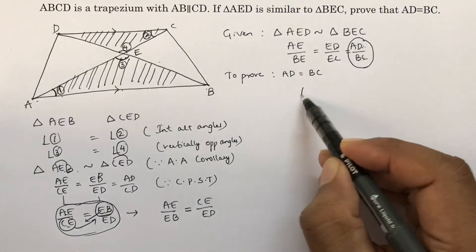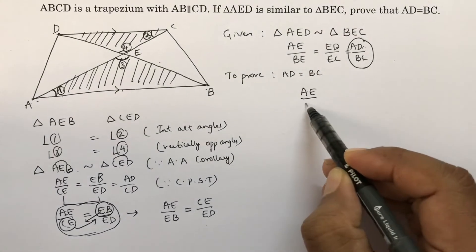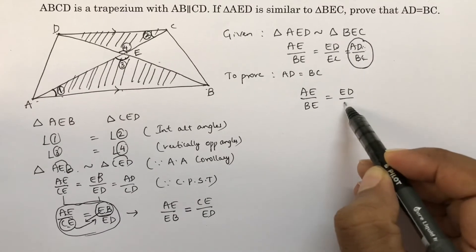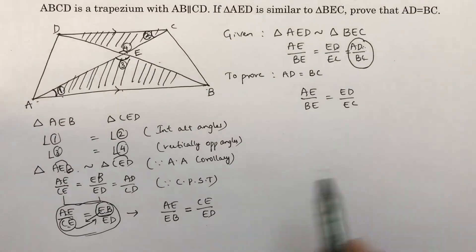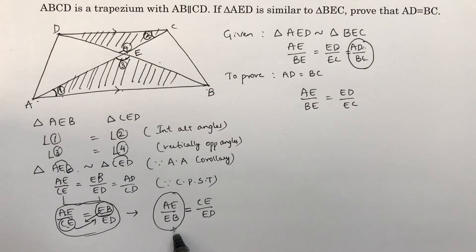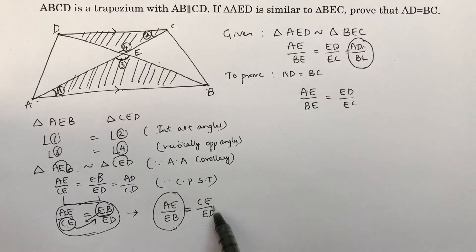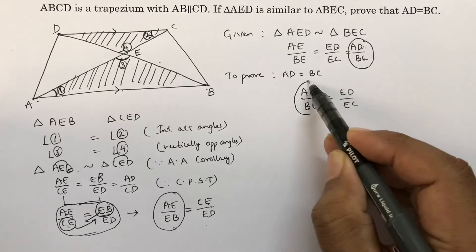Now see what is given here. AE by BE is ED by EC. Now what is the value of AE by EB? AE by EB, you can write CE by ED. So in place of this, AE by EB.